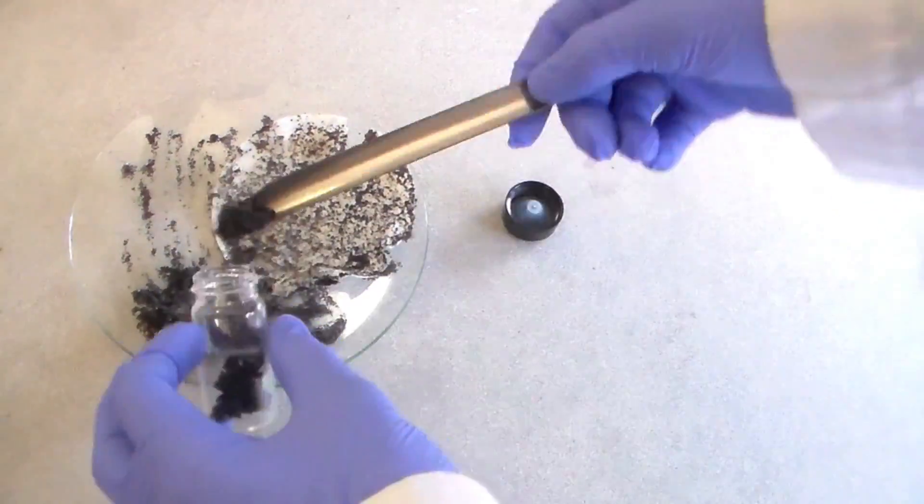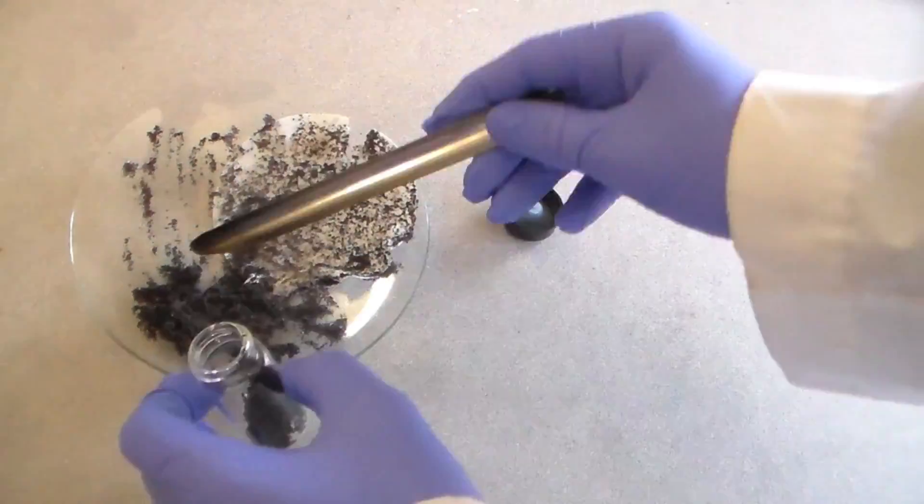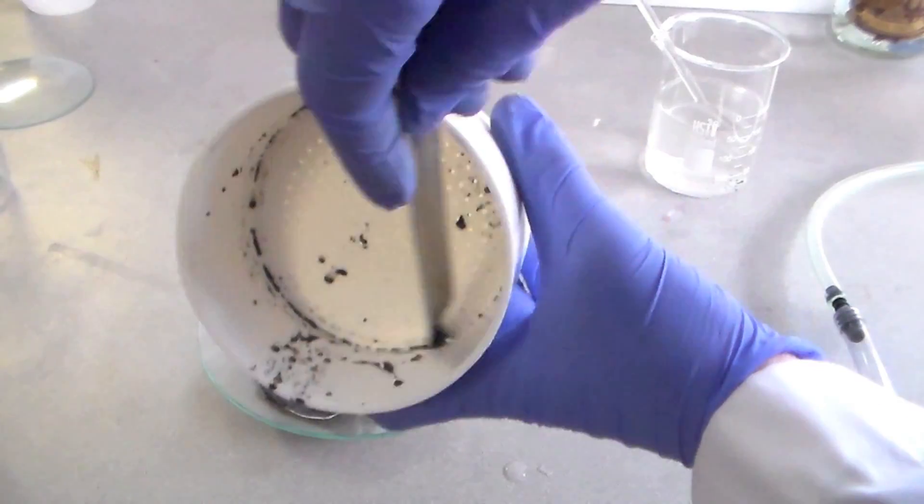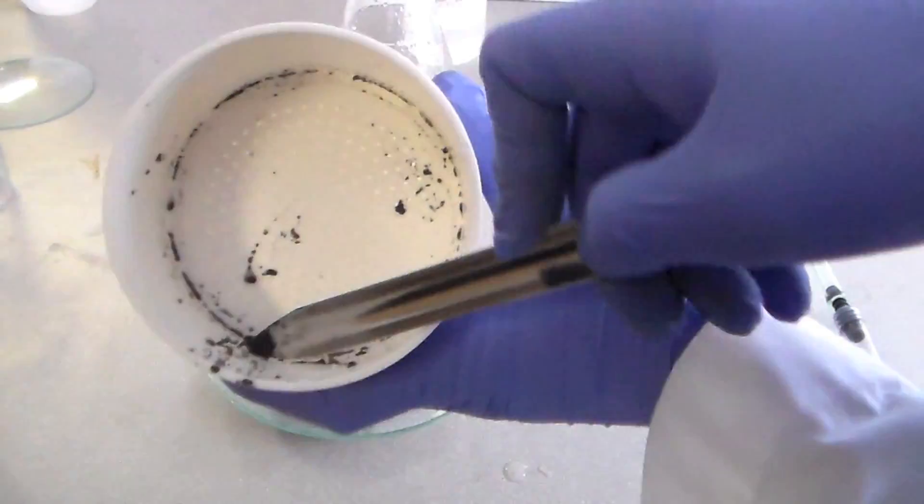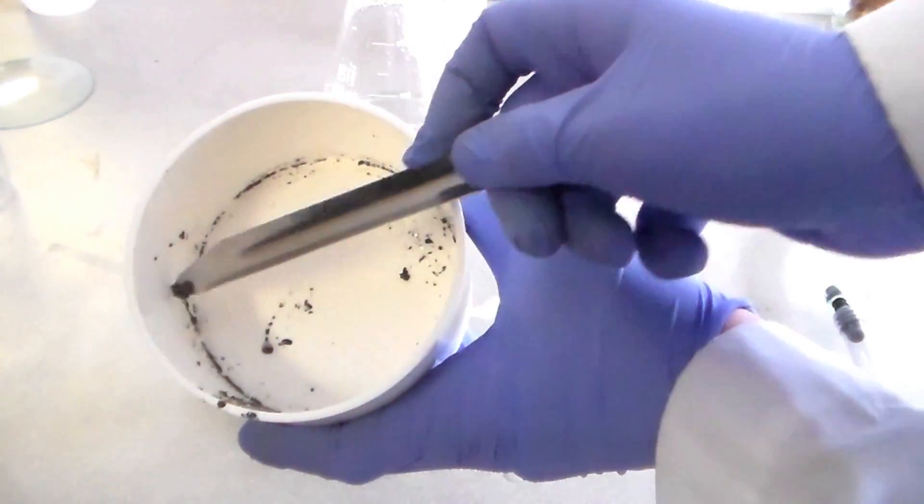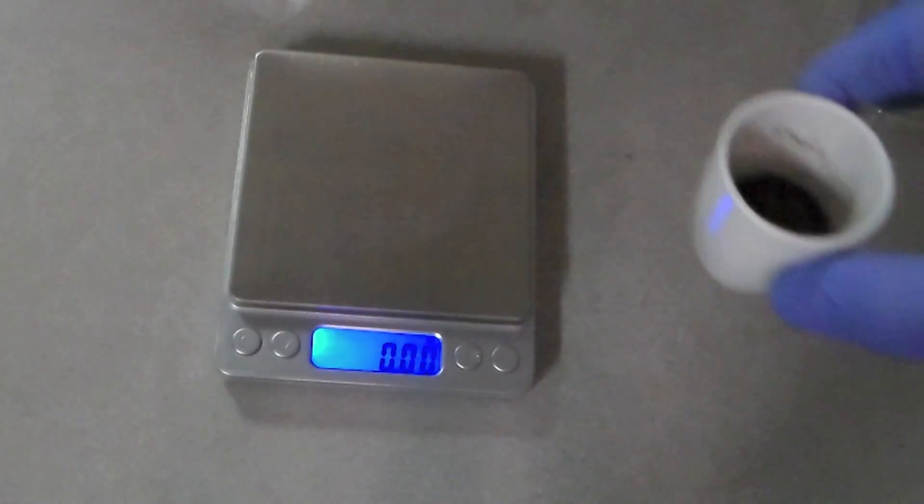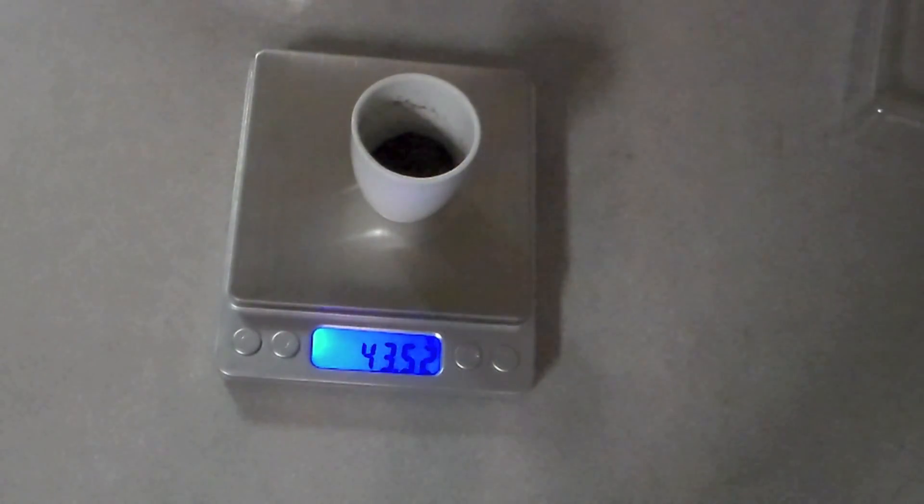and also that I lost some product by it adhering to the filter paper and Buechner funnel, I highly doubt that I achieved anywhere near a 50 percent yield. Obviously, not all of these 3.82 grams are actually silicon.